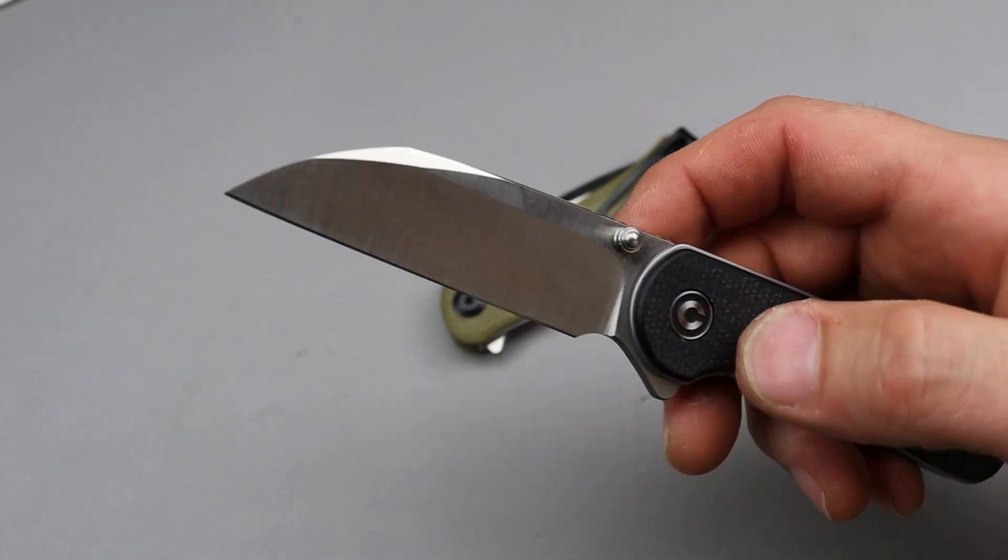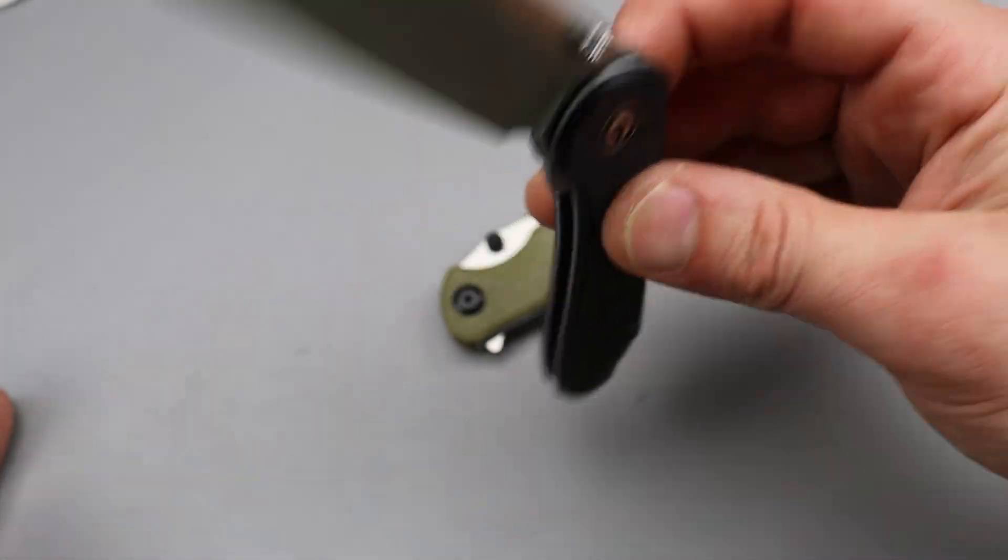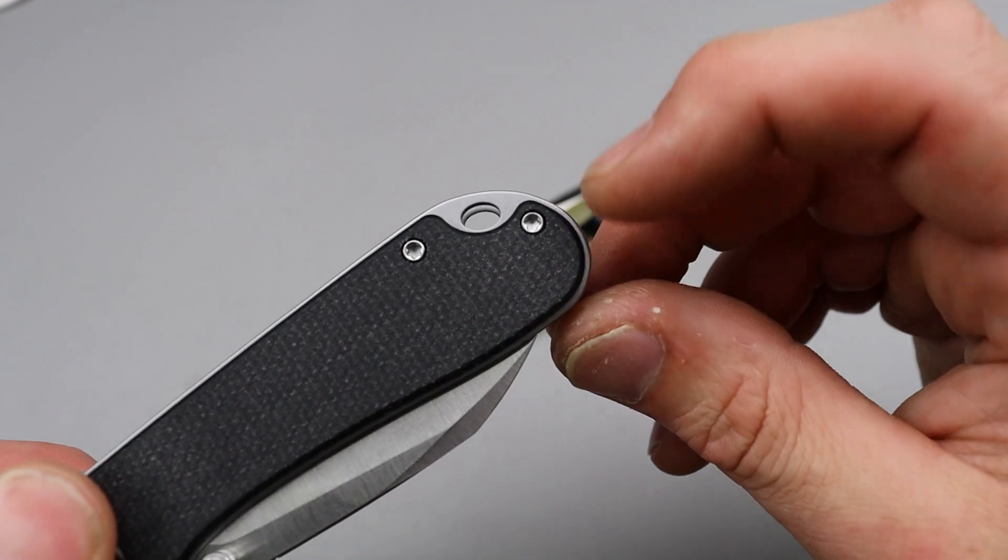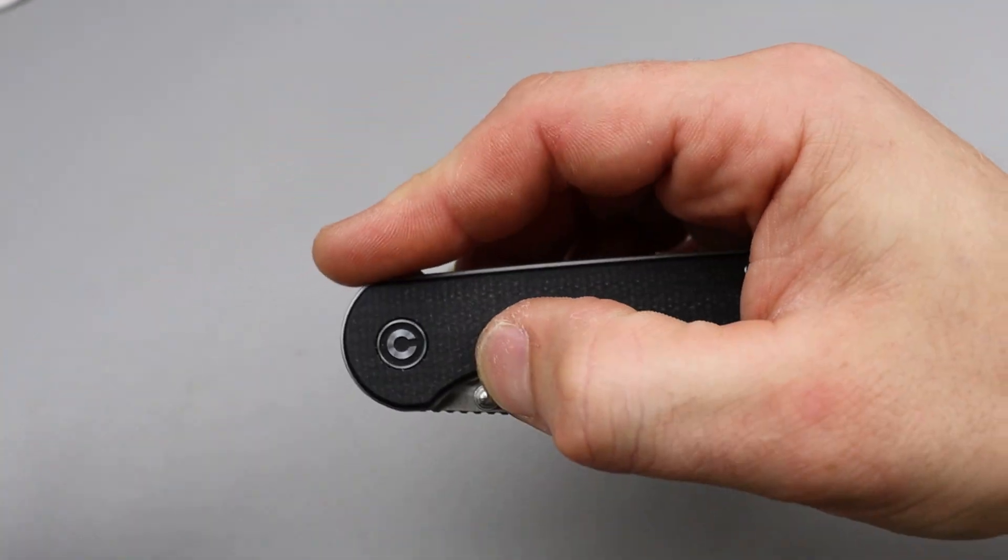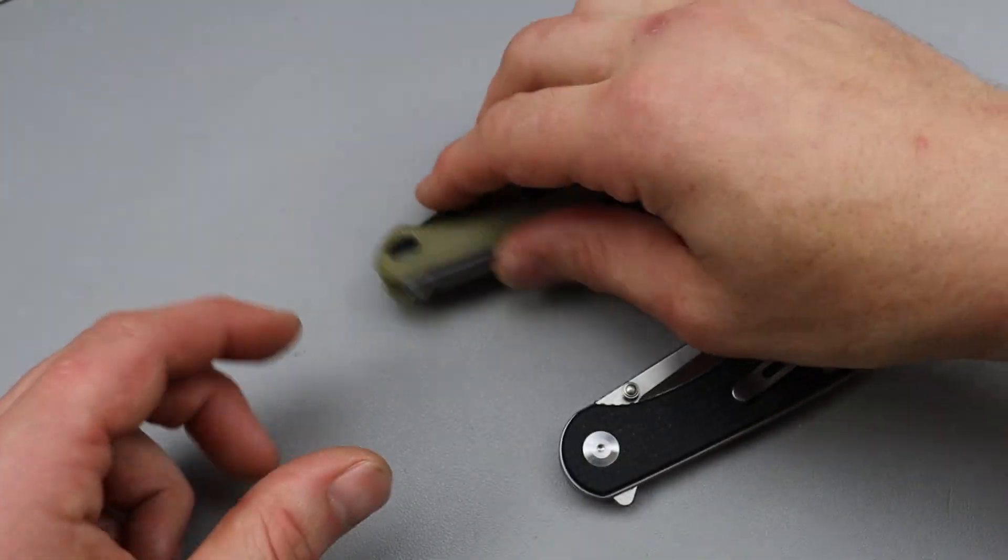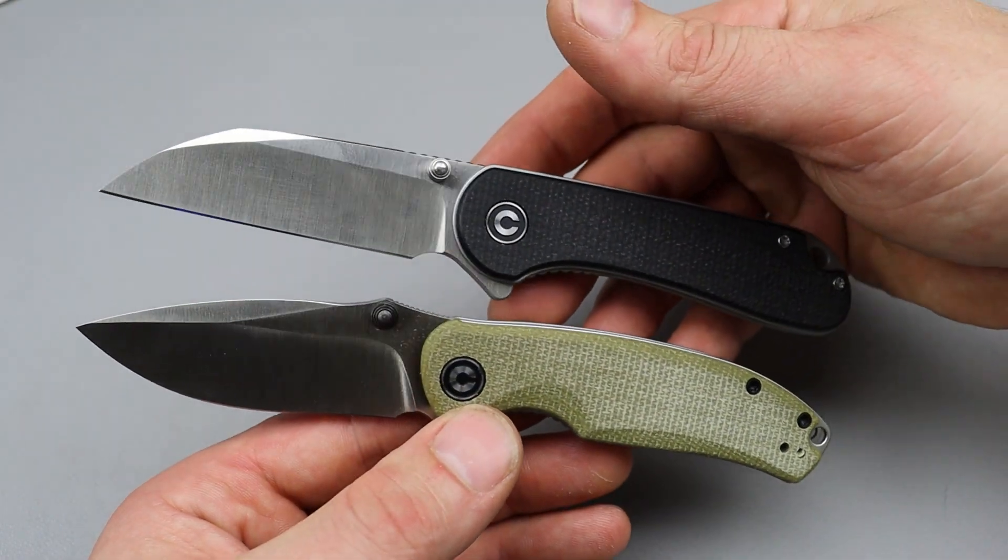Multiple forms of deployment. Nice deep hollow ground blade. This one's in Nitro-V and it's like 50 something dollars. So fantastic price. Micarta scales, deep carry clip. Not reversible but it does have T6 hardware all the way around. Great detent. Great sharpening choil.